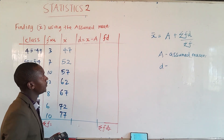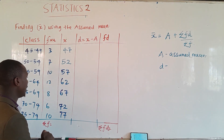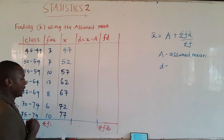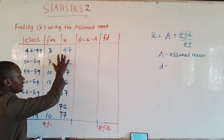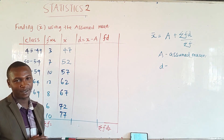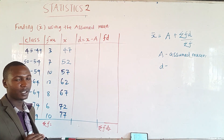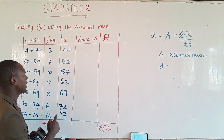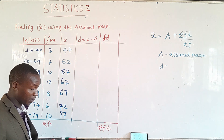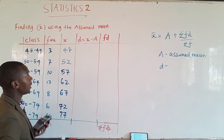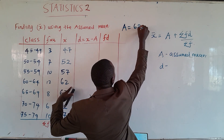Now we need to choose the assumed mean. You could pick 77 or 47, but I encourage you to make the best guess. Looking at the range from 47 to 77, the best assumed mean you could take is either 57, 62, or 67 — somewhere around there. In our example, let us use the assumed mean of 62.